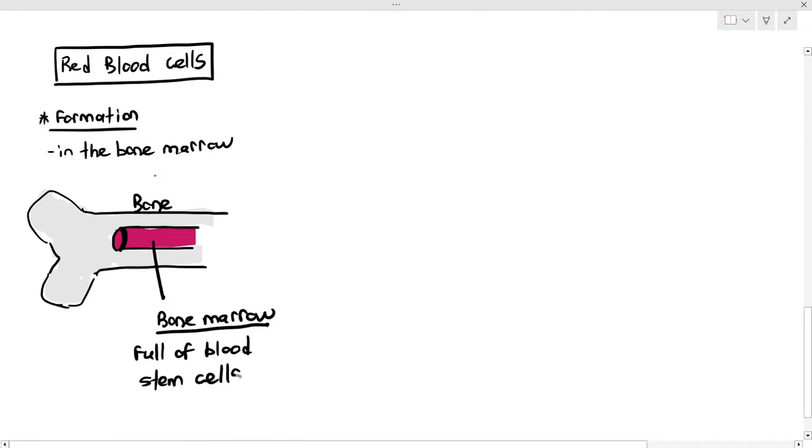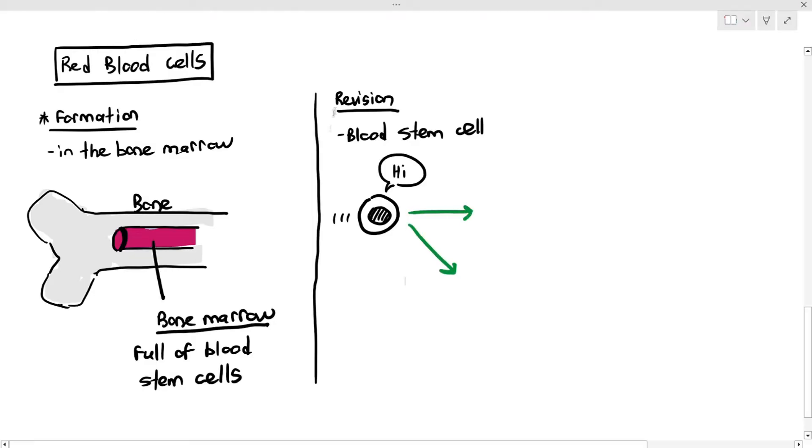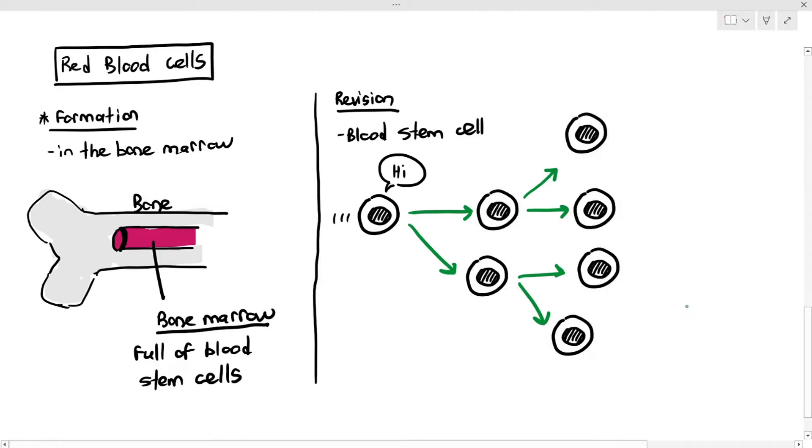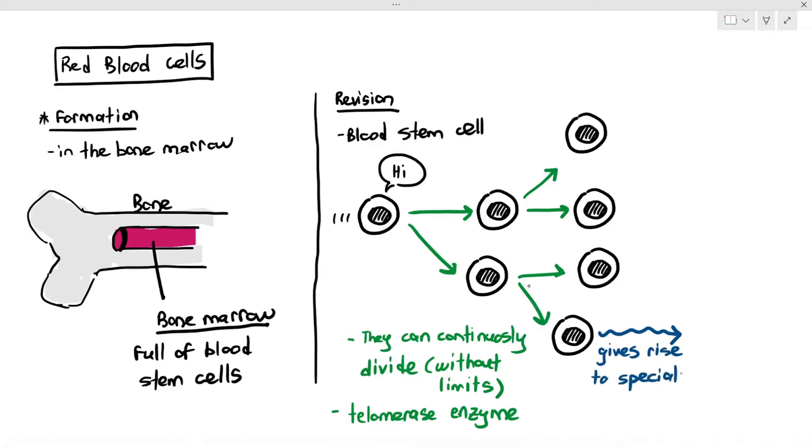So the bone marrow itself is full of blood stem cells. Now before we go into red blood cells, let's do a bit of revision for stem cells. Stem cells are just these types of cells that can continuously divide without any limits, because they have an enzyme called telomerase, which allows them to top up their telomeres, which gives them the capability to divide an unlimited amount of time. Then the blood stem cell also has another capability where it can give rise to specialized cells, and one example is the blood stem cell can specialize to become the red blood cell.